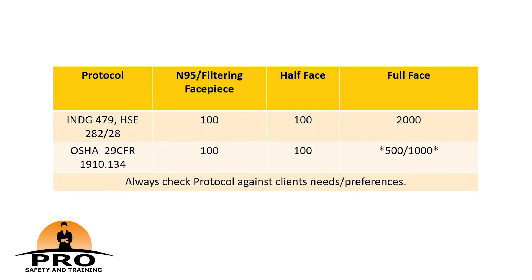As a summary for the OSHA and INDG protocols, we have the following pass levels. For INDG 479, previously called HSE 282/28, the pass level of an N95 respirator is 100, for a half-face it's also 100, and for a full-face it's 2000.